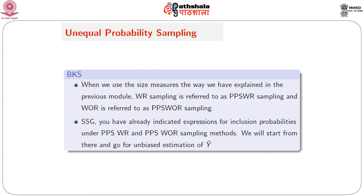We have already indicated expressions for the inclusion probabilities under PPS with replacement for general sample size n, and under PPS without replacement for a sample of size 2. We will start from there and go for unbiased estimation of the population mean.